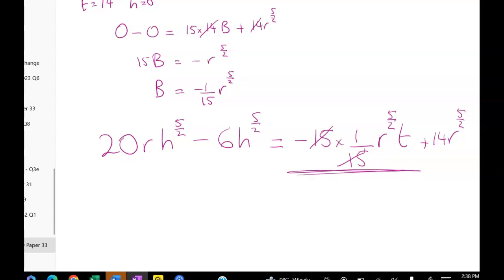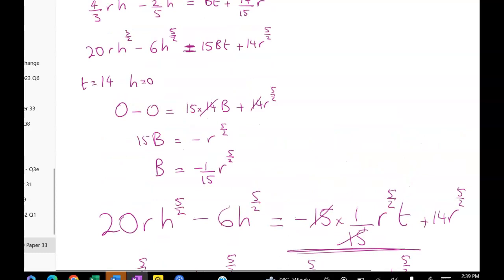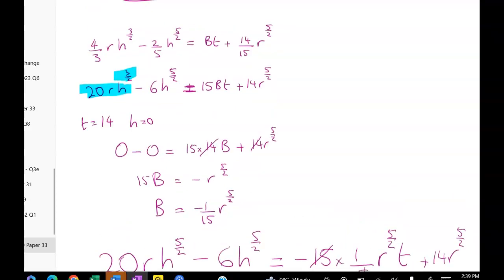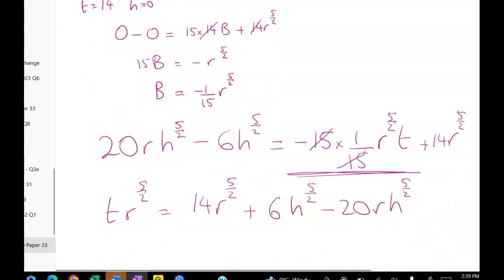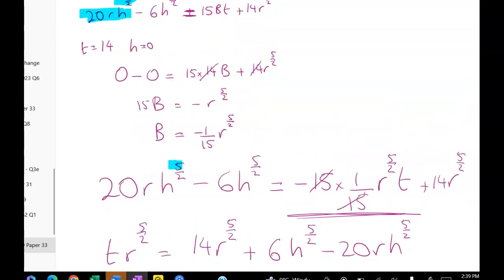I'm going to pop T times R to the five over two is equal to 14 R to the five over two plus six H to the five over two minus 20 R H to the five over two. Something's feeling wrong here. What have I done? I don't think that's a five over two. It's not. So I made a copying error. Back up here, let's just check that that was right. That was H to the three over two. And that was all good, but I've copied it wrong here. So that should not be a five. That should be a three.